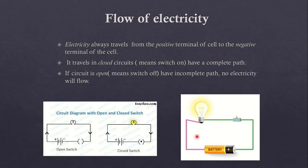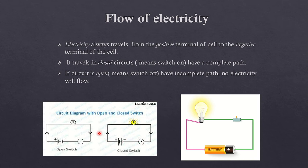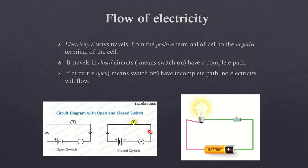How does electricity flow? Electricity flows from the positive terminal to the negative terminal of the cell. There are two types of circuits for the flow of electricity: the closed circuit and the open circuit. Closed circuit means if the path is unbroken — no any kind of breakage in the wire, switch should be on, and no any kind of breakage in the filament of the bulb. If there is no any kind of breakage, then the circuit is closed and electricity will flow.